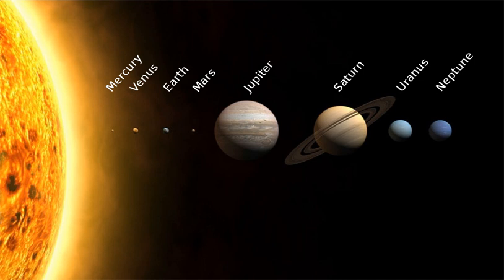7.1.3 Uranus. Uranus, 19.5 astronomical units, at 14 Earth masses, is the lightest of the outer planets. Uniquely among the planets, it orbits the Sun on its side. Its axial tilt is over 90 degrees to the ecliptic. It has a much colder core than the other giant planets and radiates very little heat into space. Uranus has 27 known satellites, the largest ones being Titania, Oberon, Umbriel, Ariel, and Miranda.